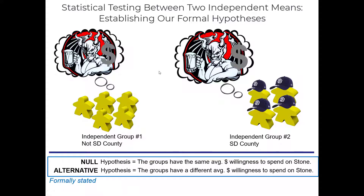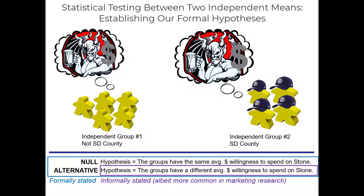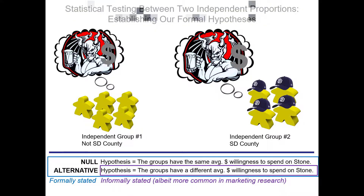This is a formal articulation of our research hypothesis, but as is often the case in marketing research, a more informal approach is used where people just call their hypothesis — which is actually their alternative hypothesis — and merely say the groups will have a different average dollars willingness to spend on Stone. If you're new to marketing research, it's your responsibility to recognize they are talking about the alternative hypothesis, and the null and alternative hypotheses when spoken in totality have to encompass all possible situations.